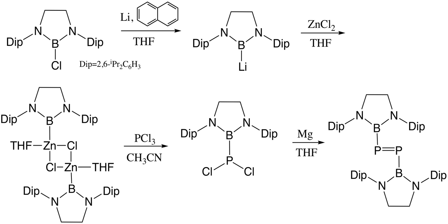Similar to the ring formation behavior in carbon addition reactions of C=C double bonds, diphosphene can form a P-C-P 3-membered ring with dihalocarbene (CCl₂ or CBr₂). Diphosphaphosphetanes can further rearrange to 1,3-diphosphaallene by ring-opening.